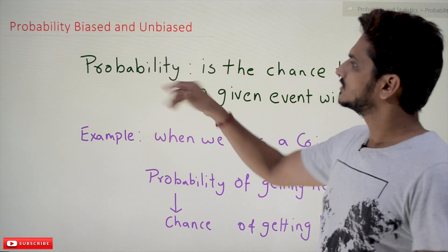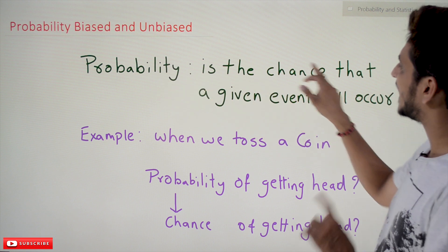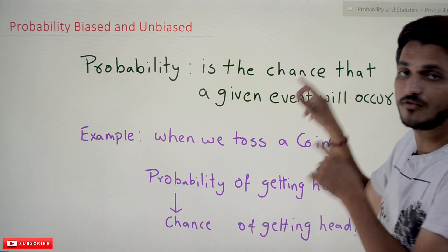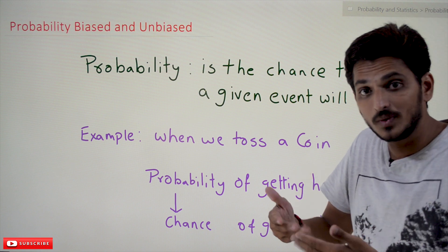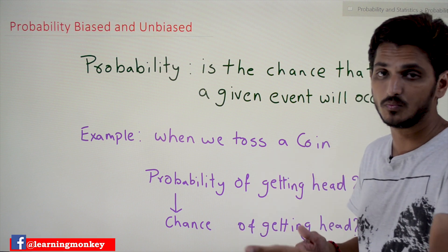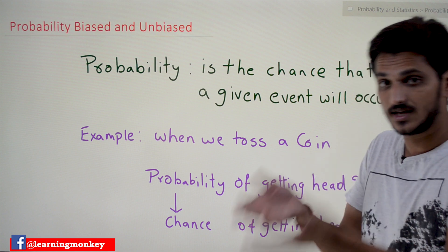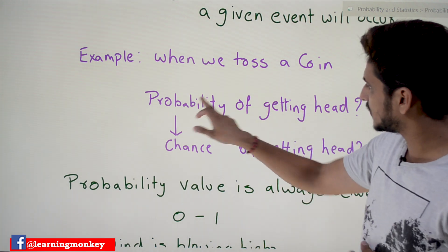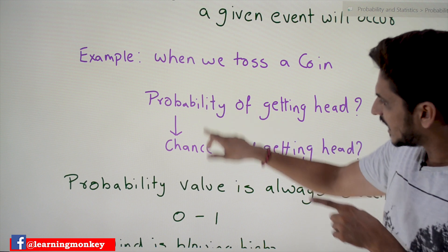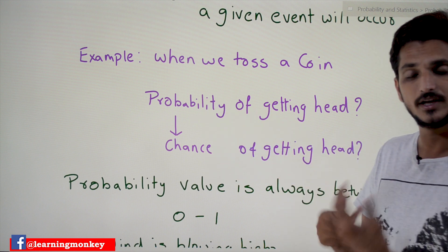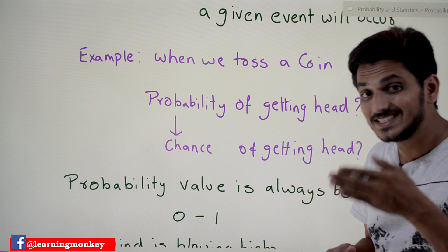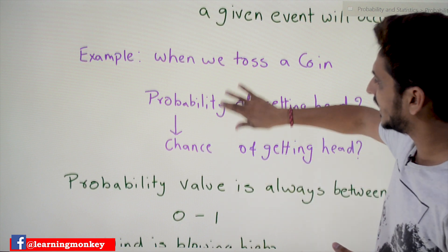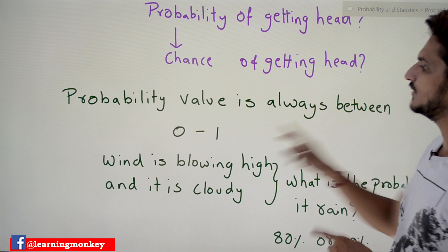These definitions will help you a lot in understanding our next classes. Coming to the definition: probability is the chance that a given event will occur. How much chance is there for an event to occur — that is what probability means. For example, when we toss a coin, what is the probability of getting head? It may show up tail or it may show up head — the chance of it being head is what probability means.